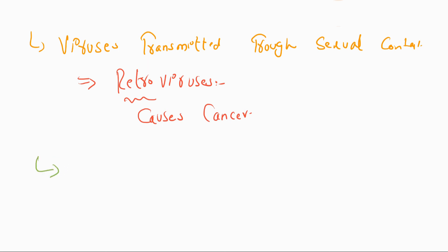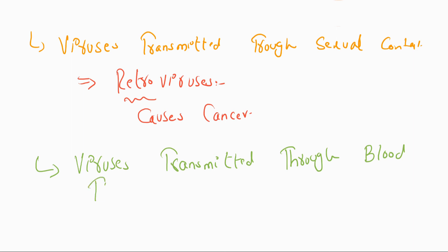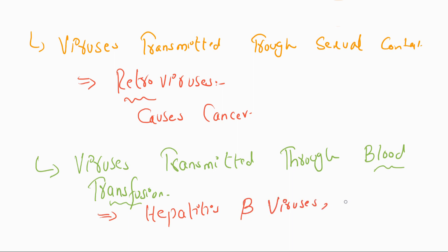The next category is viruses transmitted through blood transfusion. Blood transfusion is a process where blood is added to someone's body when they are ill or have low blood. Viruses transmitted through blood transfusion include Hepatitis B viruses and HIV — Human Immunodeficiency Virus.